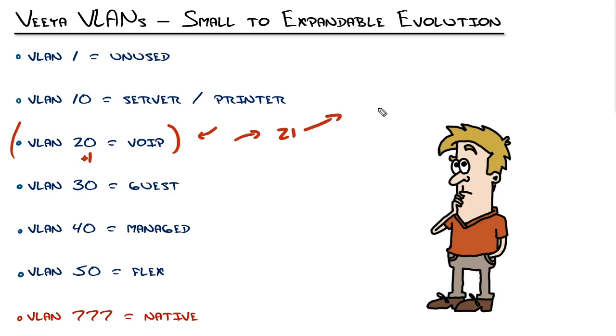When you align that up to a subnet, we'll just say it's 10.1.21.something, just as a simple example, you'll be able to easily recognize based on the IP address that that's typically an IP phone. Now that's just a bonus.